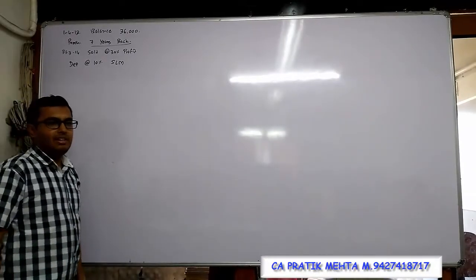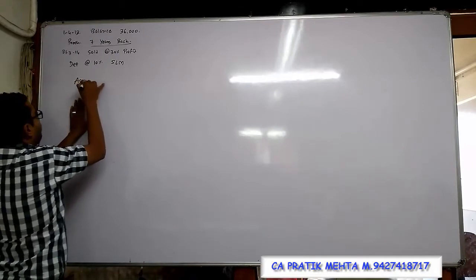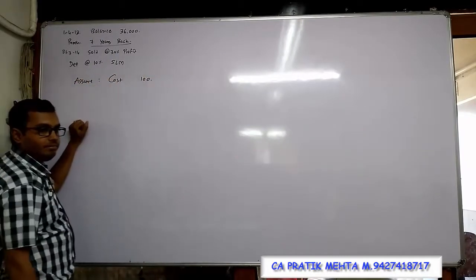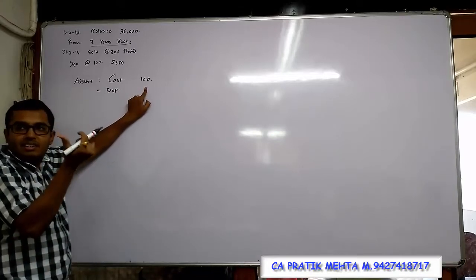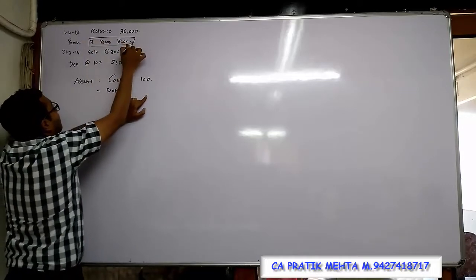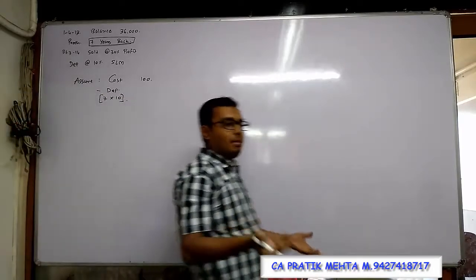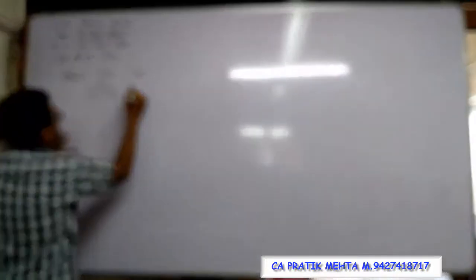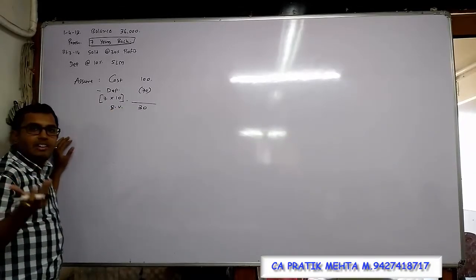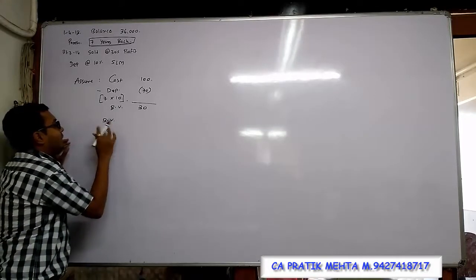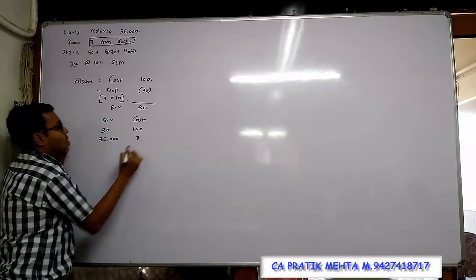As this is straight line method, I would like to find out the original cost of the machine. Assume that original cost of the machine is 100 rupees. So depreciation every year will be 10 rupees at 10 percent. And this was purchased 7 years back, so 7 years multiplied by 10 rupees each year - in straight line method, every year depreciation amount remains the same. So 7 multiplied by 10 is 70. So my book value should be 30. Now I will use cross multiplication. If my book value is 30, then my historical cost is 100. If my book value is 36,000, what should be my historical cost?